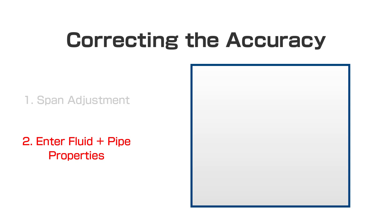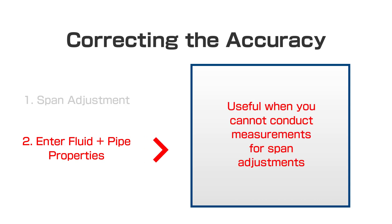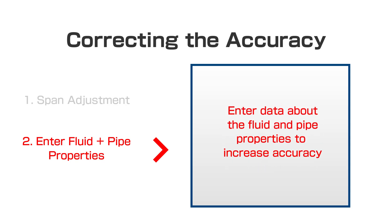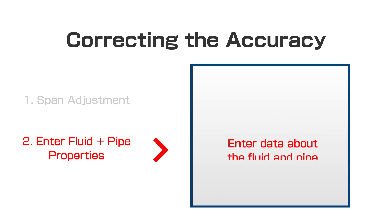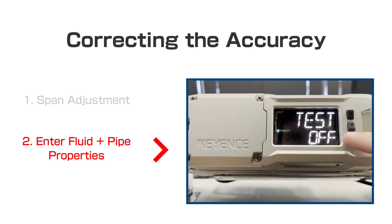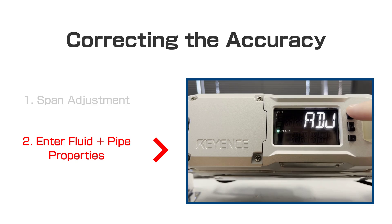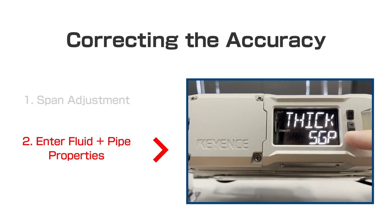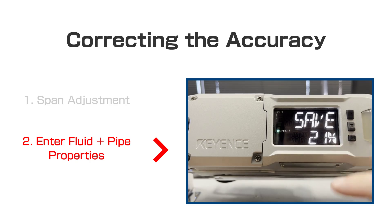If you cannot conduct any tests for the flow rate or volume traveling through the meter, you can still correct the flow rate value by entering pipe and fluid details directly. From the current value display screen, press and hold the mode button, then tap mode until you see 'end'. Tap the up arrow and the screen should change to 'full'. Now tap mode until you see 'ADJ', which stands for adjust. You can choose between entering a span adjustment, covered earlier, or entering additional information about the pipe and fluid under the 'PRO' section. When you tap mode, you'll be able to input the exact outer diameter and thickness of the pipe, the ultrasonic velocity of the fluid, and the fluid's kinematic viscosity. Inputting these settings to the best of your knowledge will help increase the accuracy.